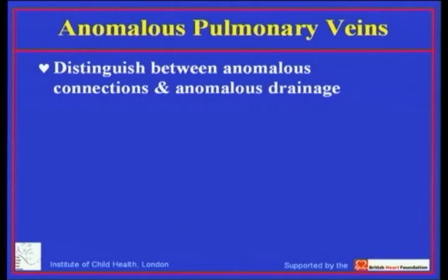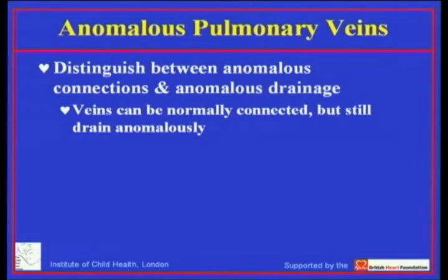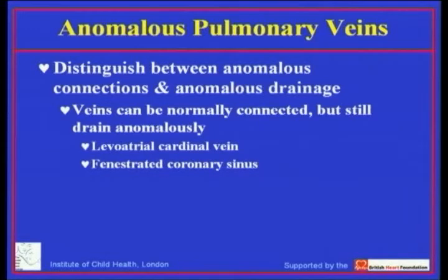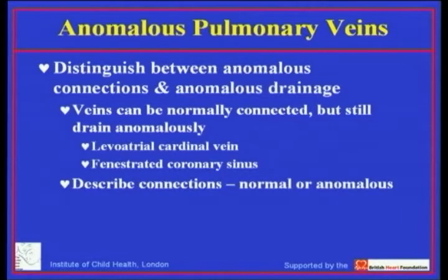The key to understanding anomalous pulmonary veins is to distinguish between anomalous connections and anomalous drainage. Pulmonary veins can be normally connected to the left atrium yet still drain anomalously because of a coexisting intact atrial septum and mitral atresia — as seen in the setting of a levoatrial cardinal vein. We can also have normally connected but anomalously draining pulmonary veins in the setting of fenestration of the coronary sinus.